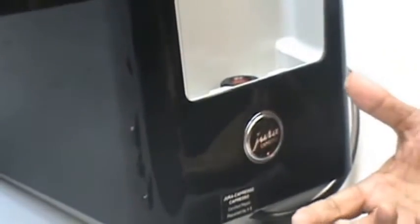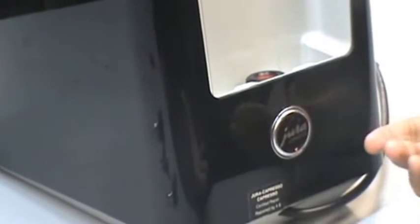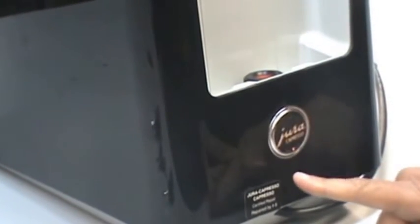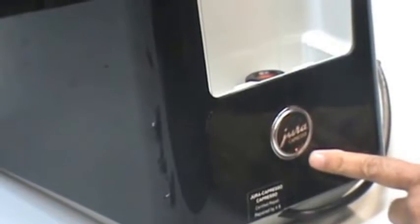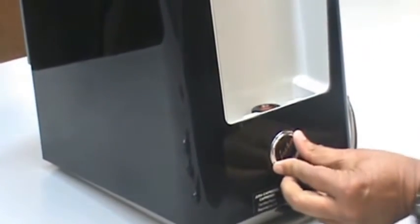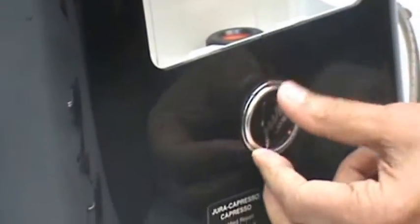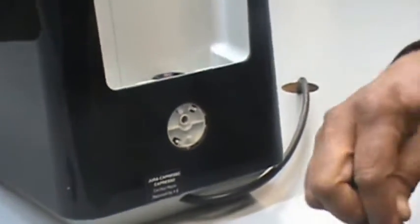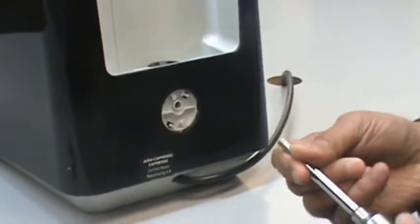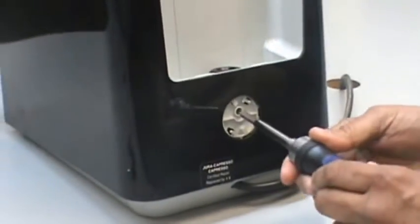To start opening the casing of this machine, you have to go from the rear where you see the Jura logo. You have to twist this Jura logo to the left, and it will come off. Inside here, you have an oval head screw, for which we will use the oval head key, and unscrew this key.